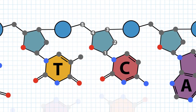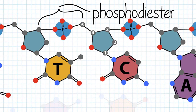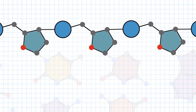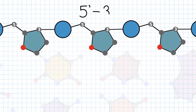Nucleotides attach to each other in the DNA strand by phosphodiester bonds. The phosphate group of one nucleotide binds to the 3' oxygen of the neighboring nucleotide. Thus, we can see that the sugars and phosphate groups make up the DNA backbone. The carbon numbering is key to describing the directionality of the DNA strand, 5' to 3'.